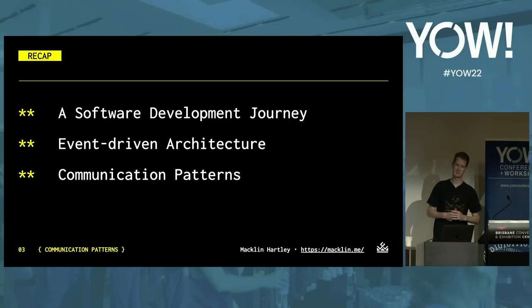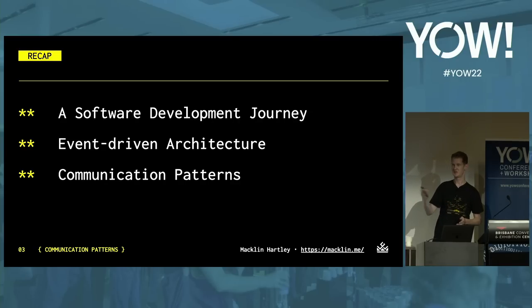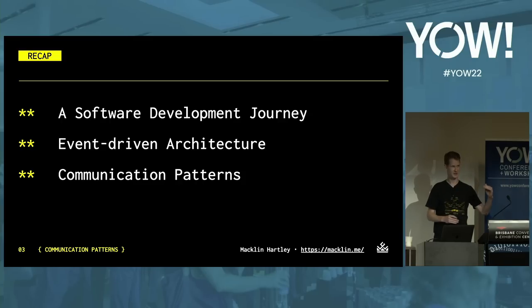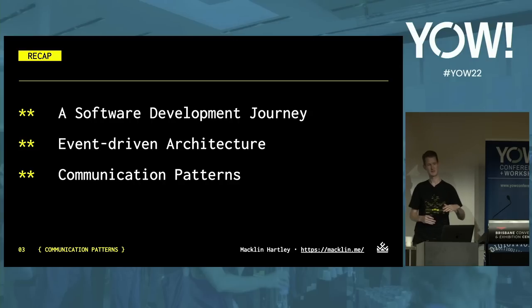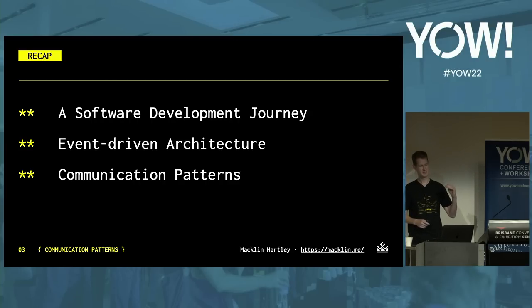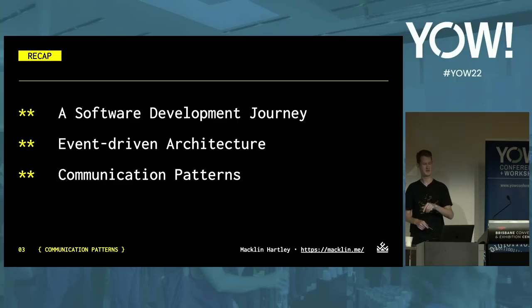The key takeaway is that there's no one-size-fits-all architecture. At each stage of the journey, a different architecture was required to evolve with the team and the product. Quick recap: we started with a software development journey — building an avatar purchase workflow, going from monolith to microservices, but really producing a distributed monolith with availability coupling. We sought out ways to improve this with an event-driven architecture, looking at two types of events — event notification and event-carried state transfer — and three ways of producing events: transaction logs, transactional outbox pattern, and event sourcing.